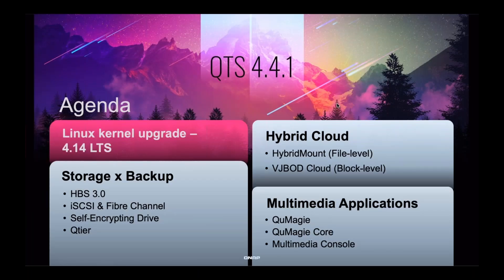First of all, we have upgraded our Linux kernel to LTS 4.14. We have a more advanced storage and backup solution — for example, Hybrid Backup Sync 3 with data deduplication. We have a more advanced hybrid cloud solution: Hybrid Mount and vjbad cloud will allow you to access public cloud storage as if it was local. We also have more advanced multimedia applications like QMagic, which has object and face recognition. QMagicore is the AI engine QMagic uses, and Multimedia Console allows you to manage your multimedia content for your different multimedia apps.